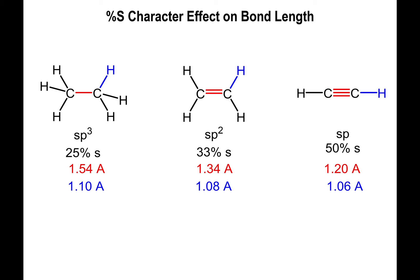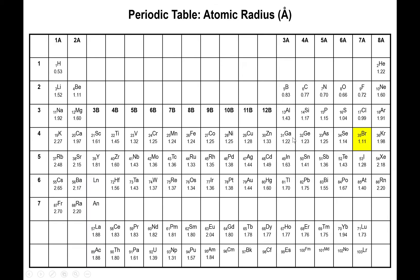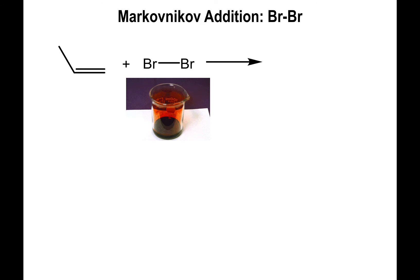Consider the bond lengths of double bonds: 1.34 angstroms for the alkene and 1.2 angstroms for the alkyne. Compared to the atomic radii of the halogens, bromine and especially iodine are large enough that the entire atom can sit on top of both carbons of the double bond, which has a specific outcome that dictates what happens in this type of reaction.